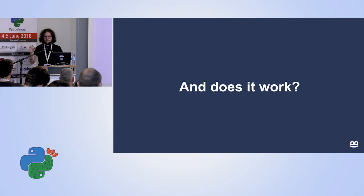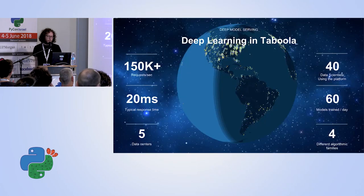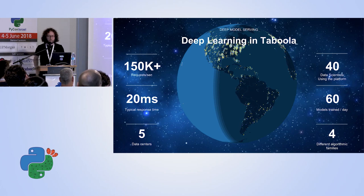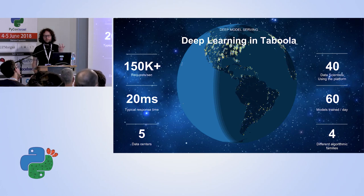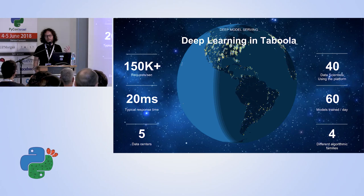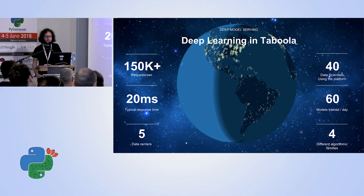In terms of Taboola's scale: we've been running this system for about a year in this iteration, some other iterations for a year and a half. It's a large engineering system — it does a lot of requests around the world on our own hardware. Equally important: we're a team of almost 40 people, we do periodic models because that's what recommendations require, training models every day. We manage to train about 60 models across four different algorithms, running a lot of experiments. So far it's worked great.